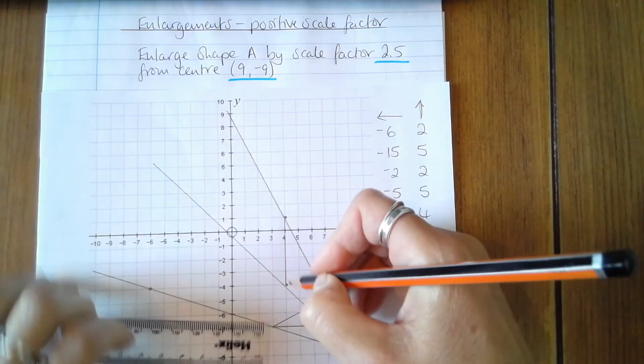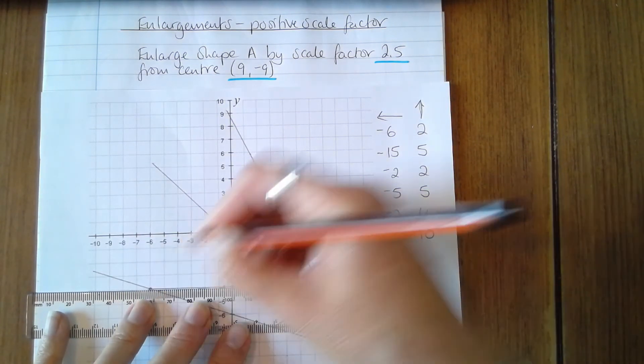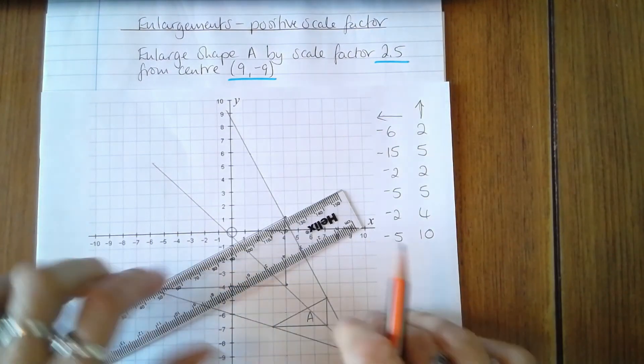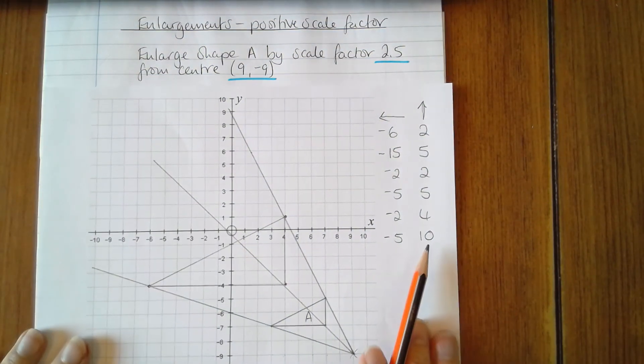So once I join up the vertices, I can check whether the new shape is in fact 2.5 times the size of the original.